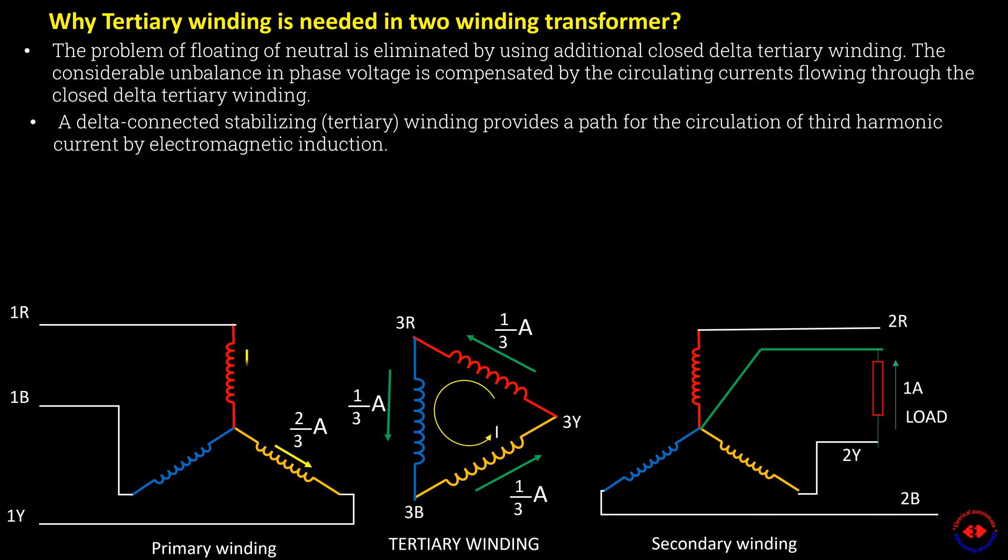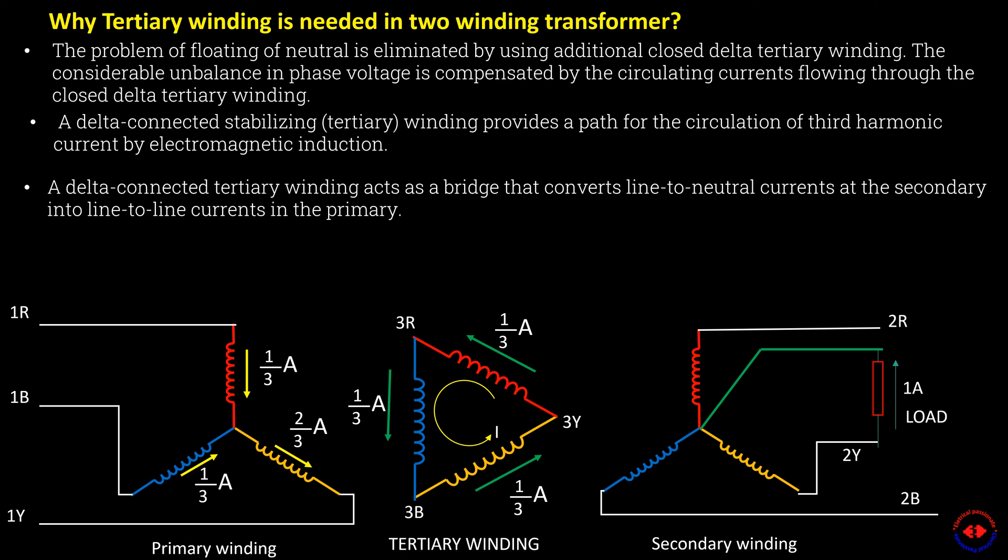Load current sharing part of primary Y-phase, that is 2/3 ampere, will be equal to the sum of the load current part of R and B-phase primary, that is 1/3 ampere each. Here phase current is equal to line current. A delta-connected tertiary winding acts as a bridge that converts line to neutral current at the secondary into line-to-line currents in primary.